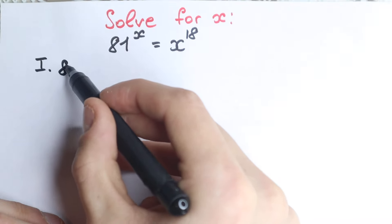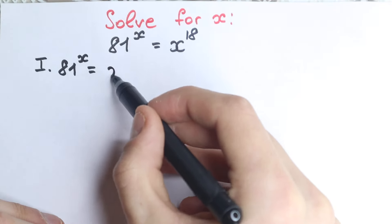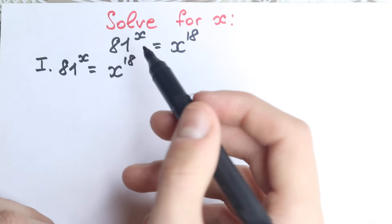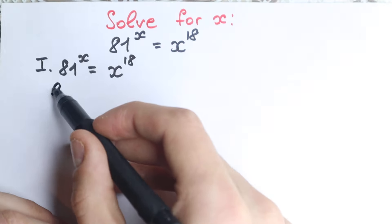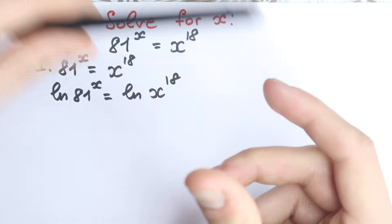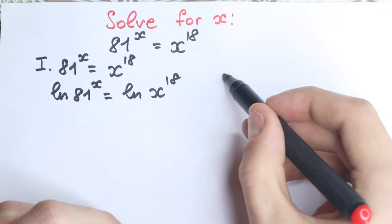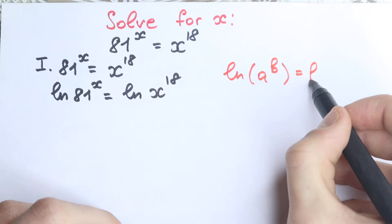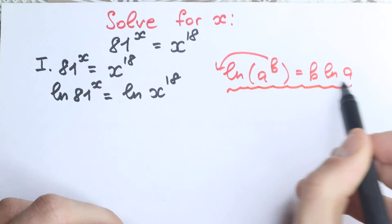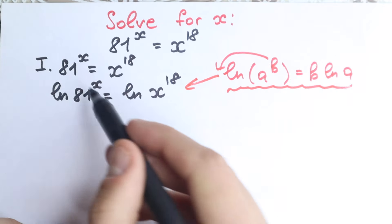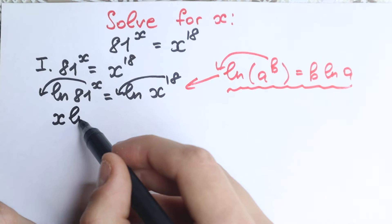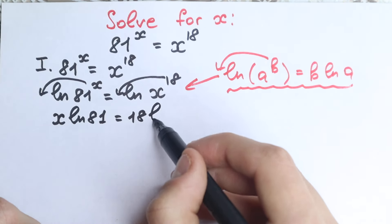So we have our question: 81 to the power x equals x to the power 18. What we're going to do next is use the natural log function, because if we take natural log on both sides, we get: natural log of 81^x equals natural log of x^18. Using the log power rule — natural log of a^b equals b times natural log of a — the exponent comes down. So we have x times natural log 81 equals 18 times natural log x.